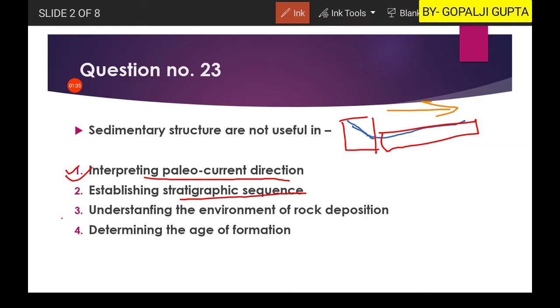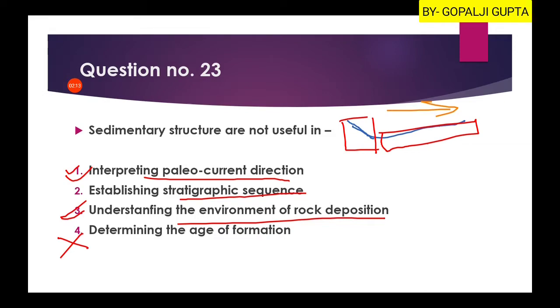The third option is understanding environment of rock deposition. Yes, we can also use sedimentary structures for the environment of rock deposition. There are some structures formed in high energy environment and some in low energy environment. We also have some structures which show different wave action. Like symmetrical ripples show oscillatory motion of waves. So we can use them for environment of rock deposition. But we can't use them for determination of age of formation. So the fourth option will be our right answer.